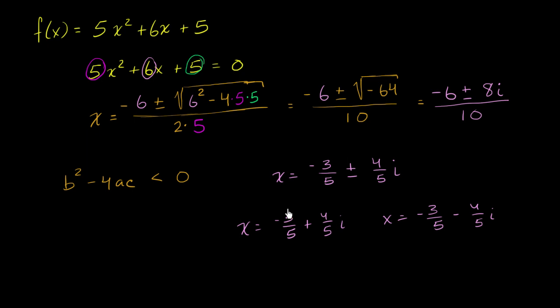Notice, we satisfied the fundamental theorem of algebra. We have two roots. They're non-real, but the fundamental theorem says that an nth degree polynomial will have n complex roots, which could be real or non-real. And we see that right over here.